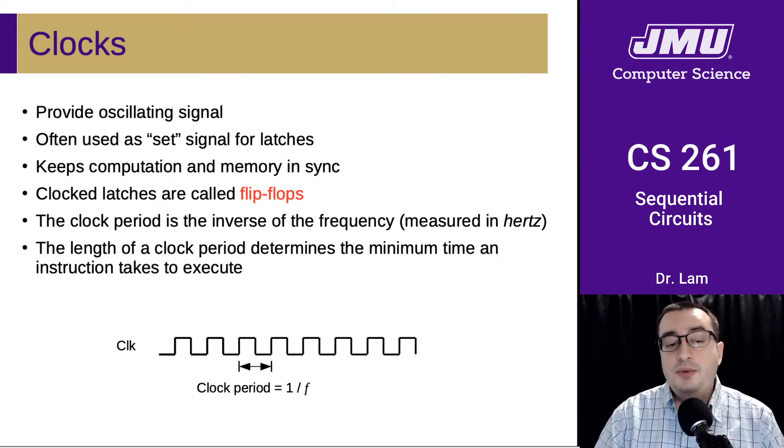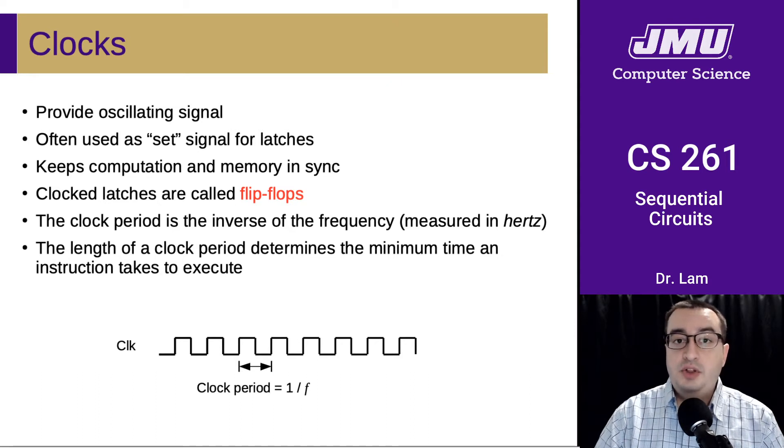And so basically the clock period is just the length of time that a CPU has to do the next cycle of calculations before the memory sets again. And so it's sort of the minimum time that an instruction will take to execute.